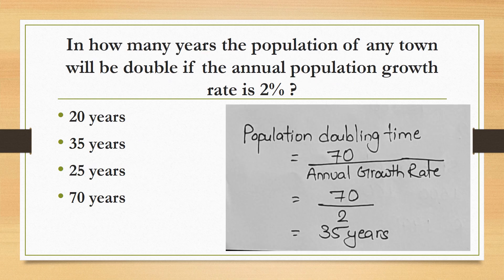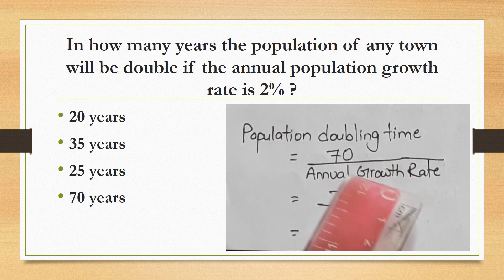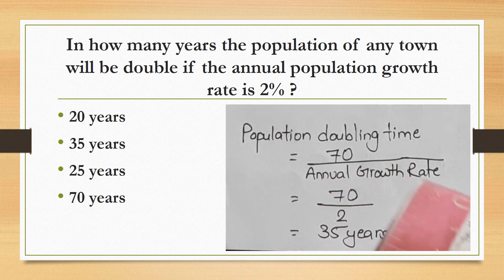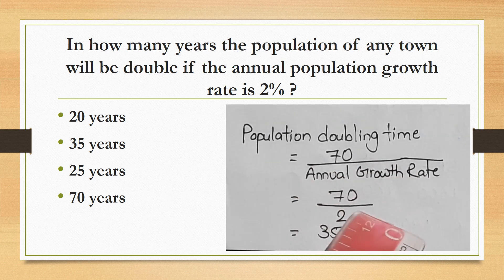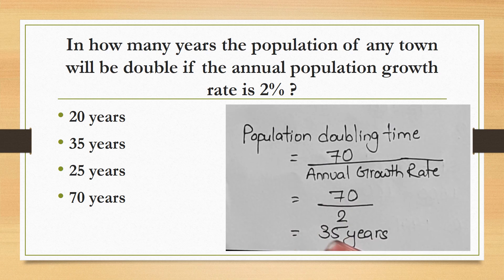In how many years will the population of a town double if the annual population growth rate is 2%? Using the population doubling time formula: doubling time = 70 / annual growth rate = 70 / 2 = 35 years.